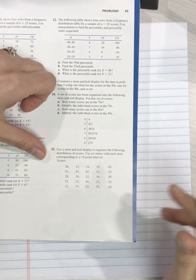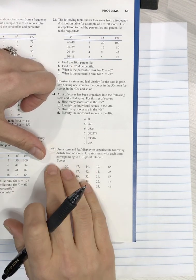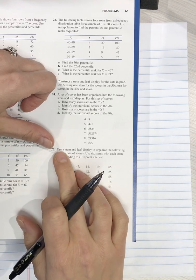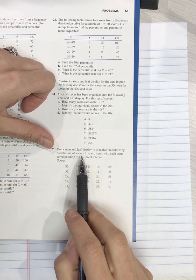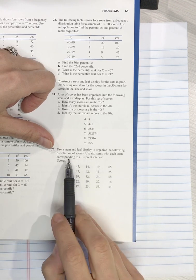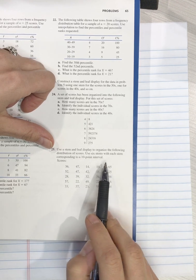This question that I'm about to do is in chapter 2, question 25, and it says use a stem and leaf display to organize the following distribution of scores. Use six stems with each stem corresponding to a 10-point interval.